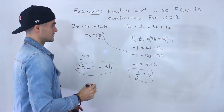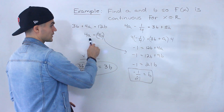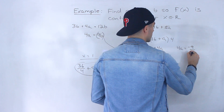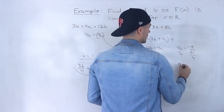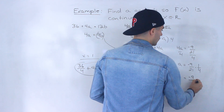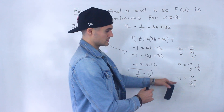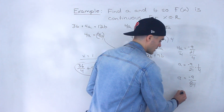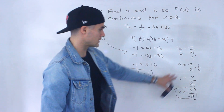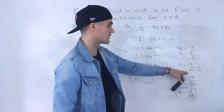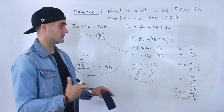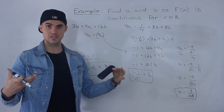With b found, we plug it back in: 4a equals 9 times negative 1 over 21 equals negative 9 over 21. Dividing both sides by 4 — equivalently multiplying by 1 over 4 — gives a equals negative 9 over 84. Simplifying by dividing numerator and denominator by 3 gives a equals negative 3 over 28. So a equals negative 3 over 28 and b equals negative 1 over 21 are the values that make the original piecewise function continuous for all x values.